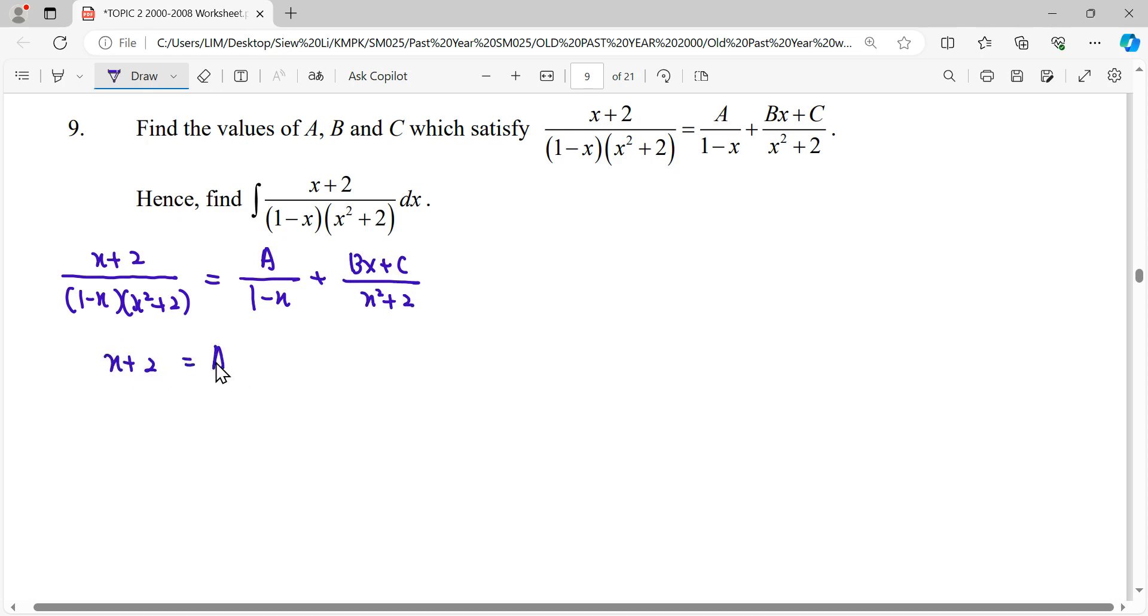Then what we need to do next is get the same denominator so we can get an equation. A will multiply with the factor x squared plus 2, then Bx plus C will multiply with the factor 1 minus x. Then we can start.